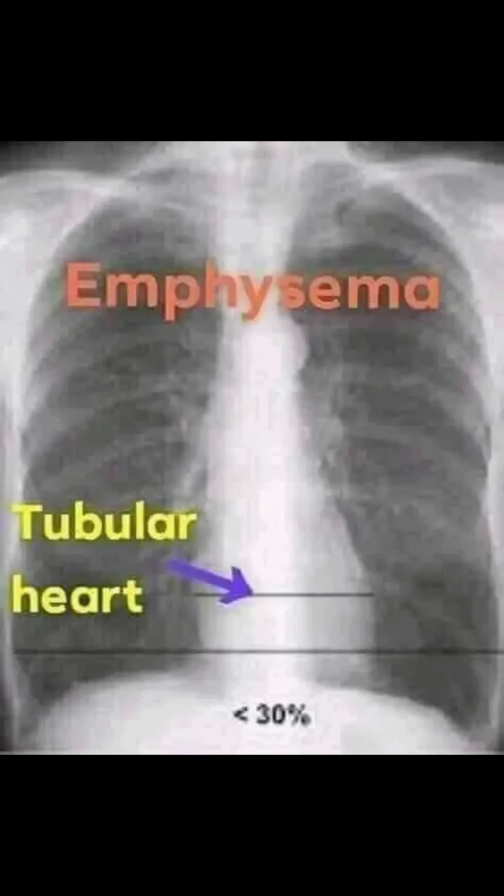In this, there is honeycomb appearance and ring-like shadow, suggestive of bronchiectasis. And in emphysema, there is a tubular heart and hypertranslucency is seen.